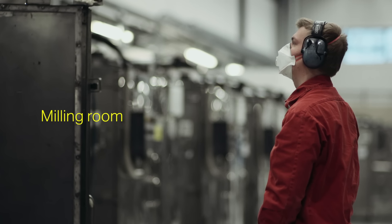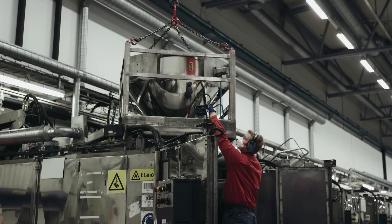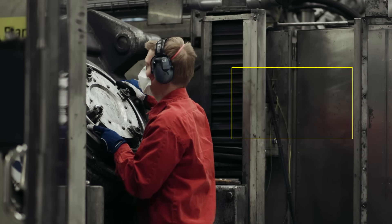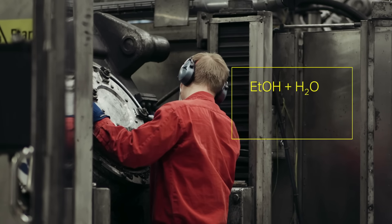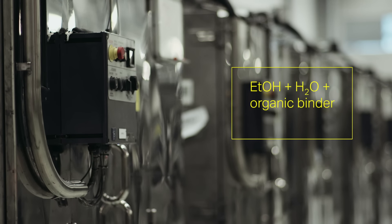In the milling room, the ingredients are milled to the required particle size, together with ethanol, water and an organic binder. This process takes from 8 to 55 hours, depending on the recipe.